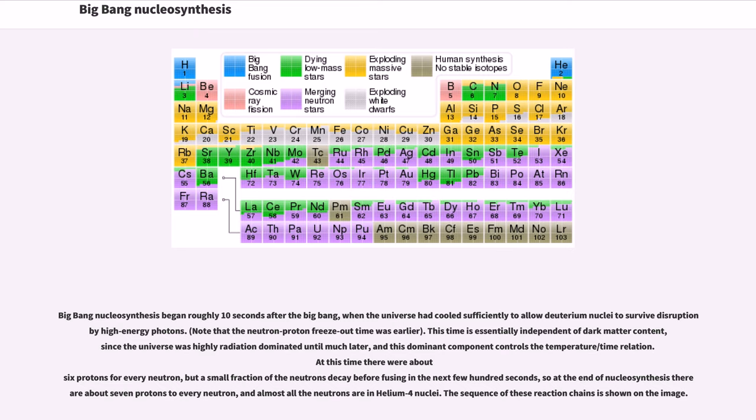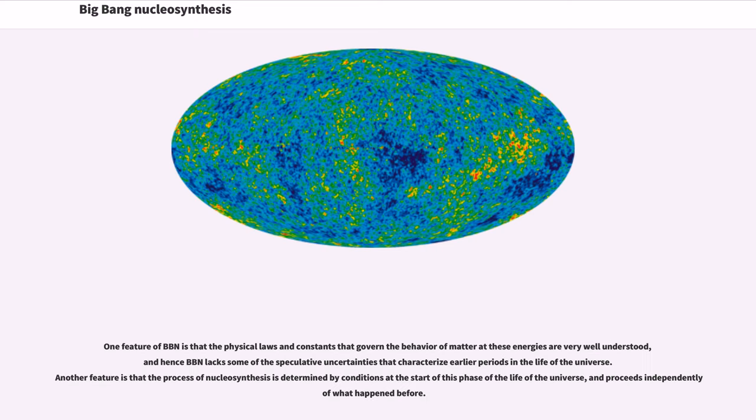The sequence of these reaction chains is shown on the image. One feature of BBN is that the physical laws and constants that govern the behavior of matter at these energies are very well understood, and hence BBN lacks some of the speculative uncertainties that characterize earlier periods in the life of the universe. Another feature is that the process of nucleosynthesis is determined by conditions at the start of this phase of the life of the universe, and proceeds independently of what happened before.